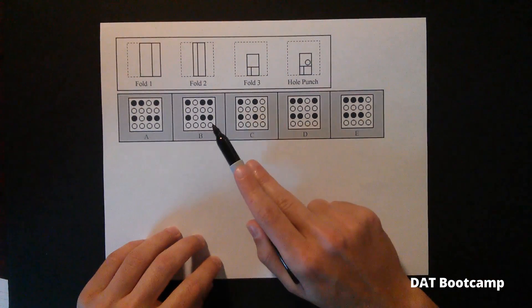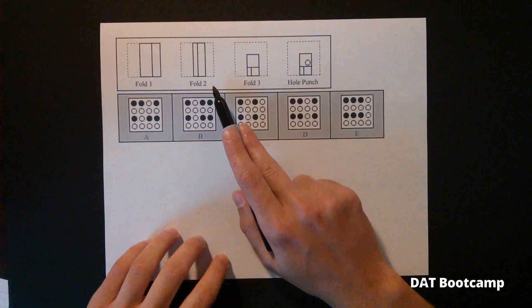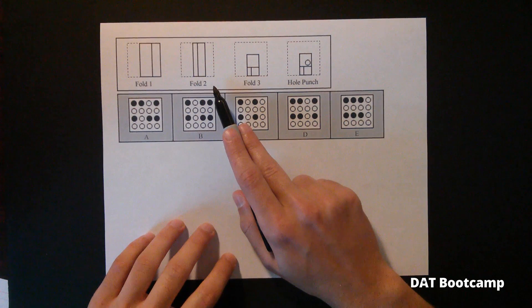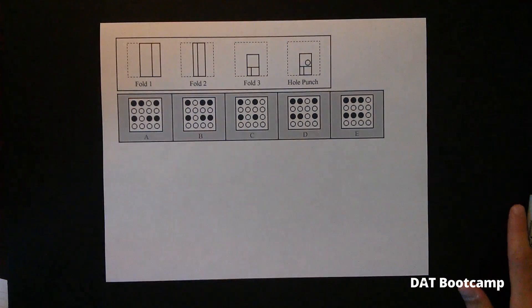All right, this is a problem I want to touch on. This is an example of a one-third fold problem. And these types of problems tend to give people a lot of trouble on the DAT, but they really shouldn't. I'm going to break down how to solve them step-by-step.